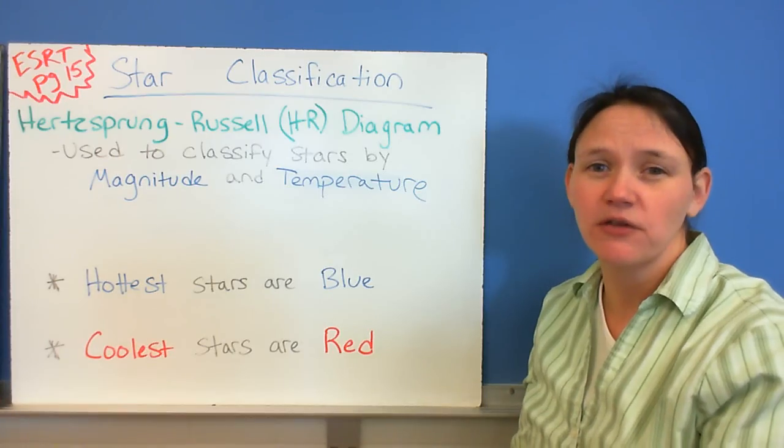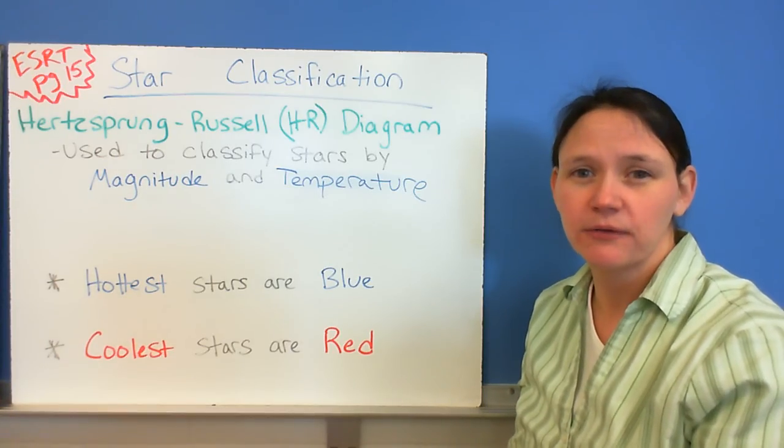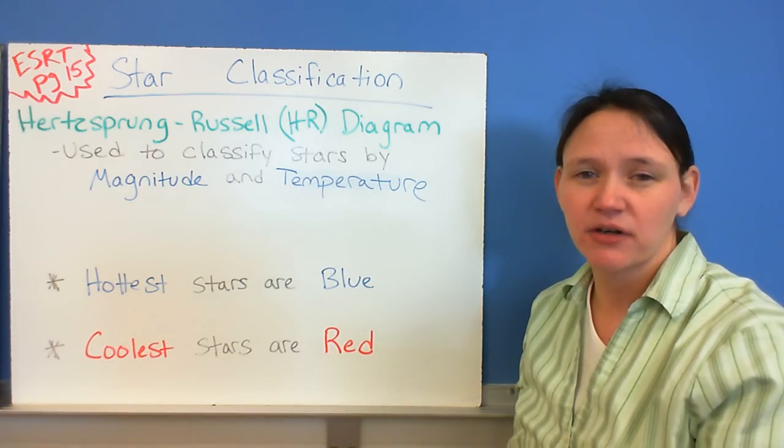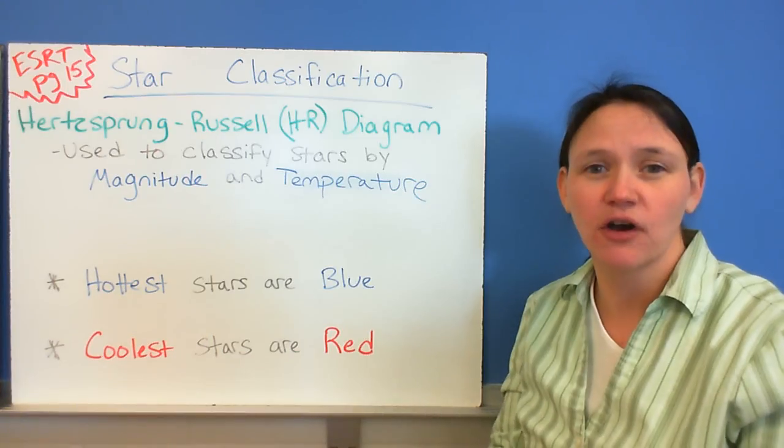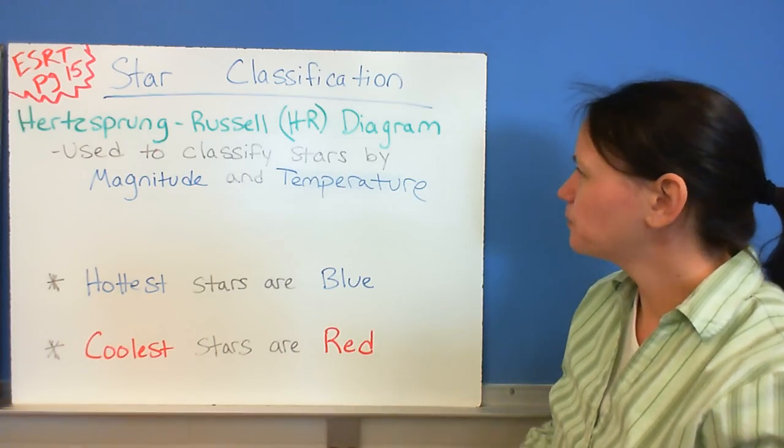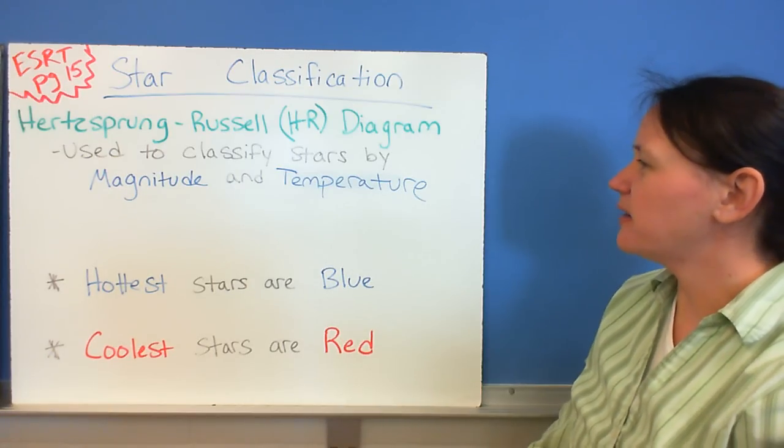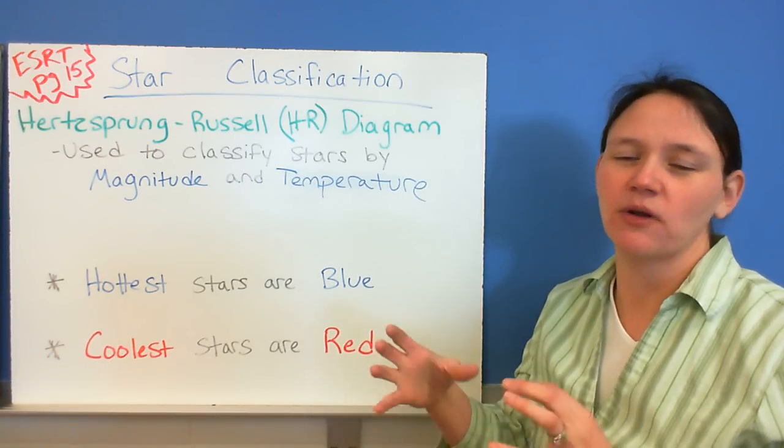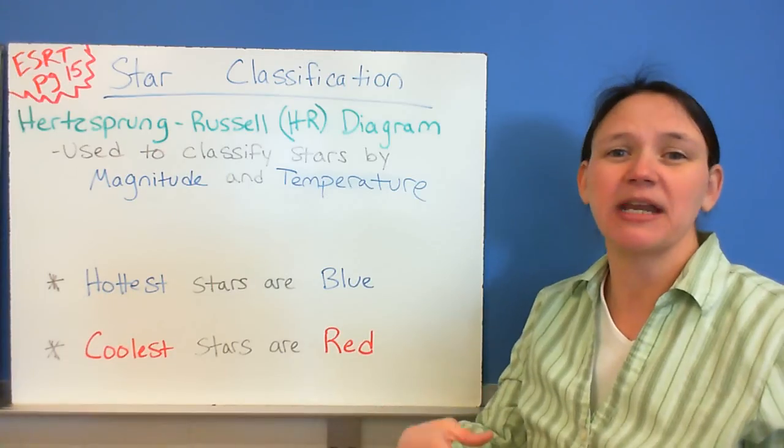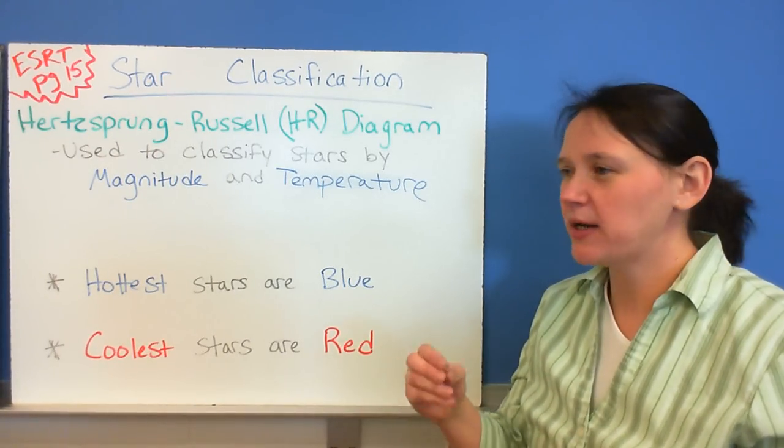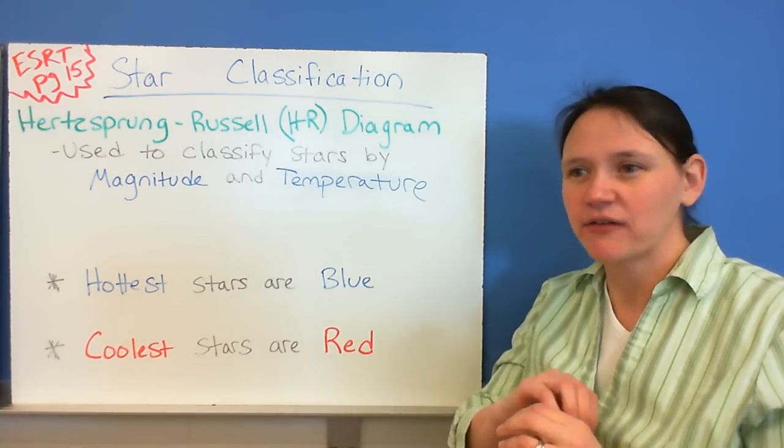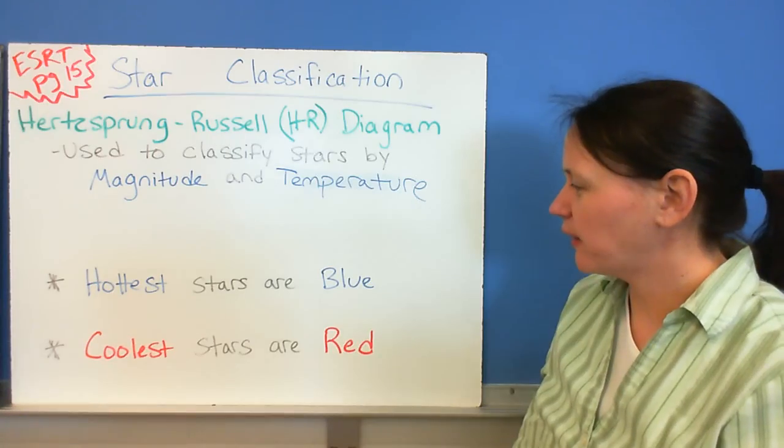And make sure you have your reference table with you in class, because we're going to be coloring the different shades of color of the stars. So bring that with you. But the HR diagram is set up looking at the temperature and the magnitude of the star. Magnitude meaning how bright it is. So we can compare those two things, and it creates this diagram or graph.